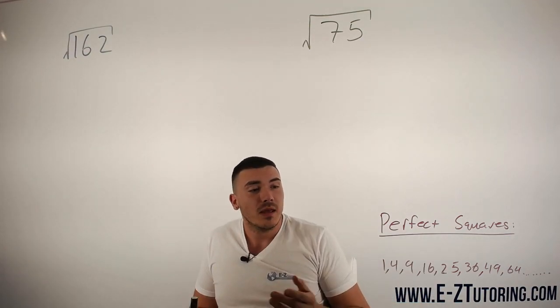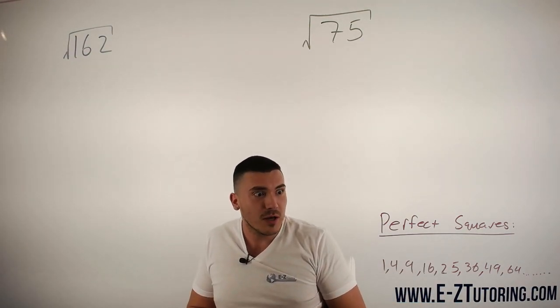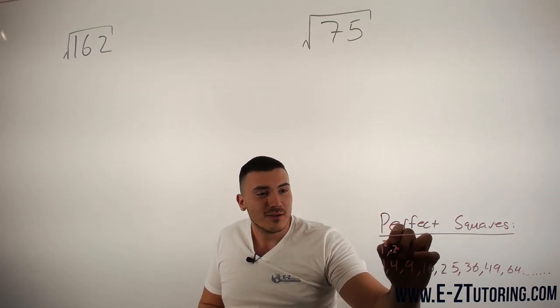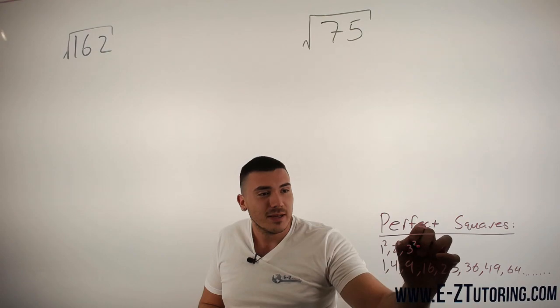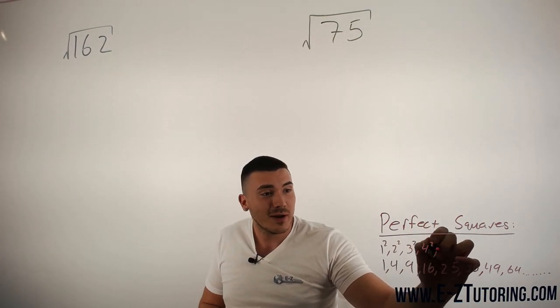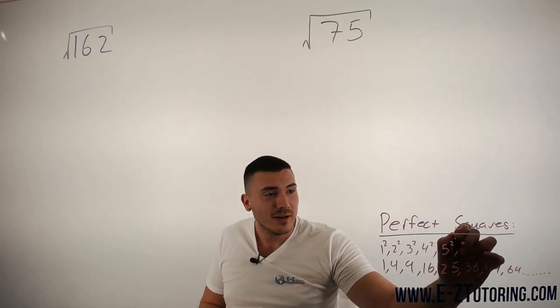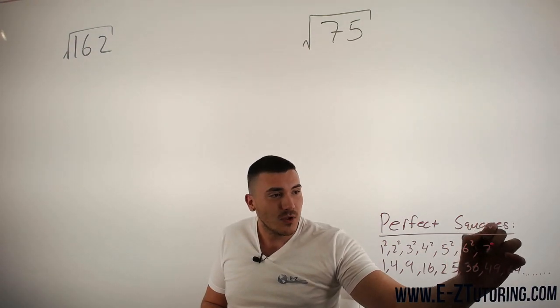So you might be thinking, how do you come up with that list so fast? It's very easy. 1 squared, 2 squared, 3 squared, 4 squared, 5 squared, and you just keep doing that list.